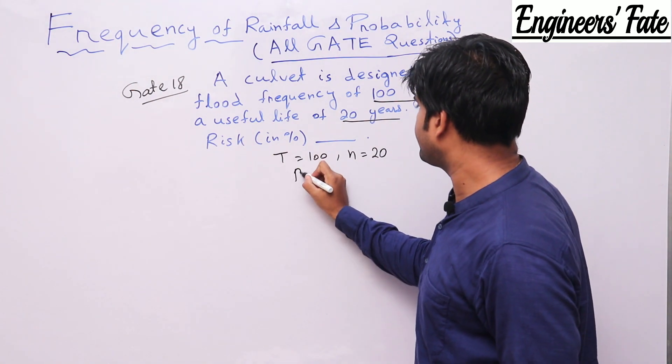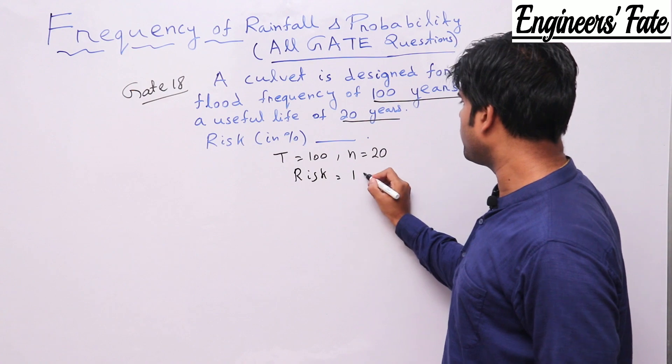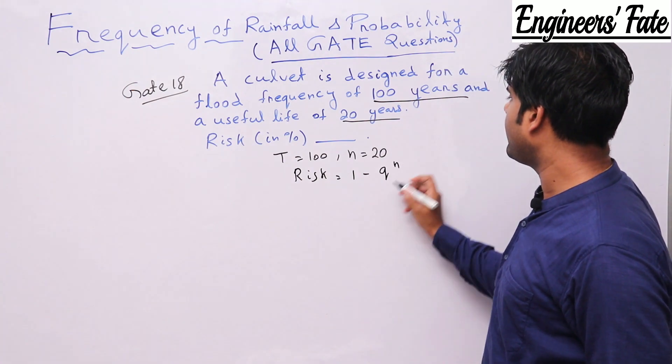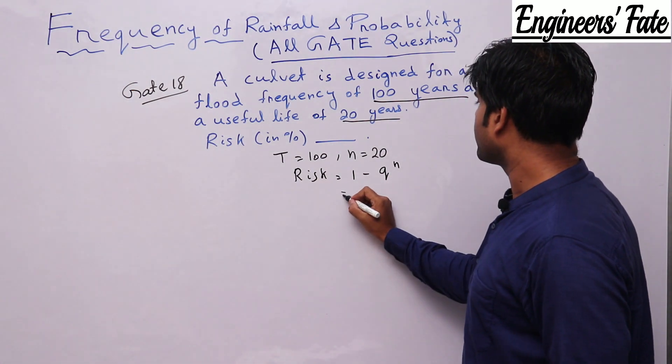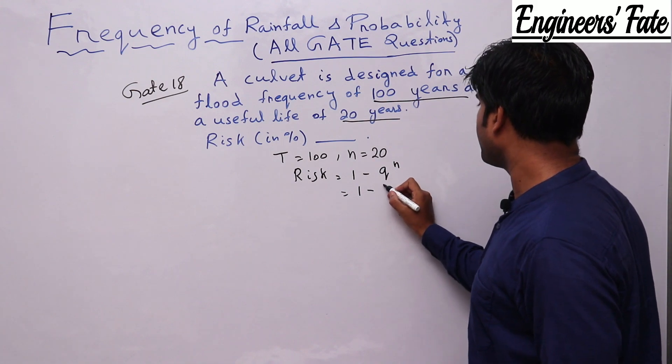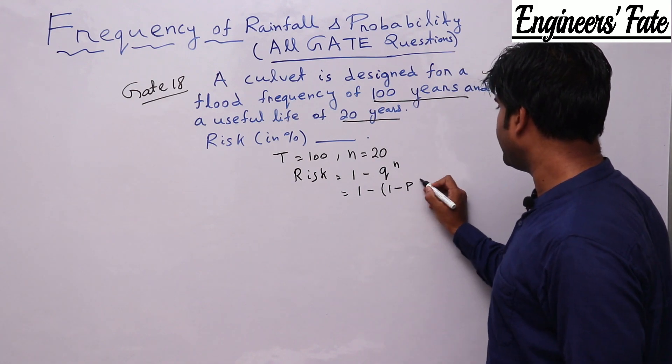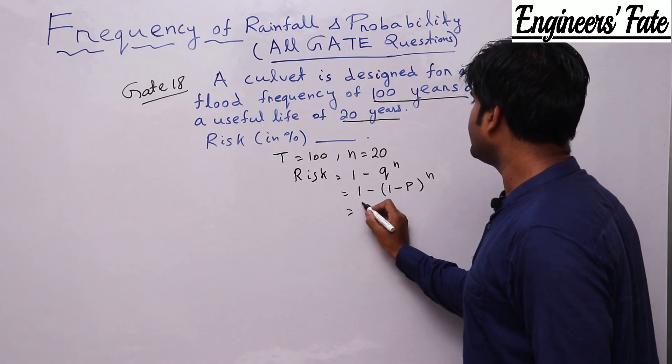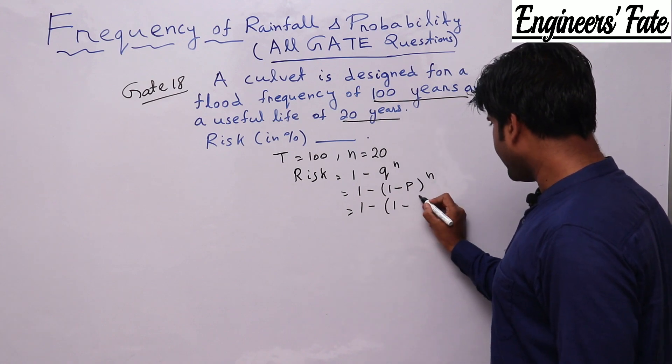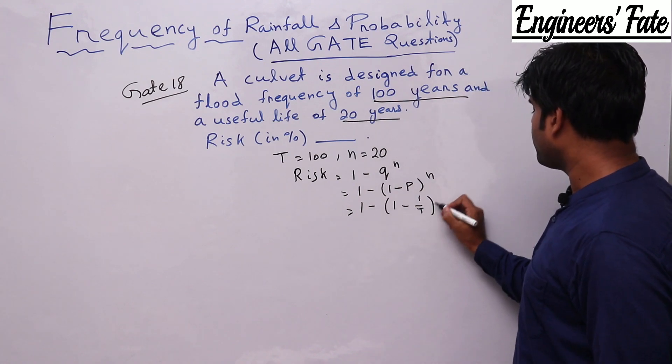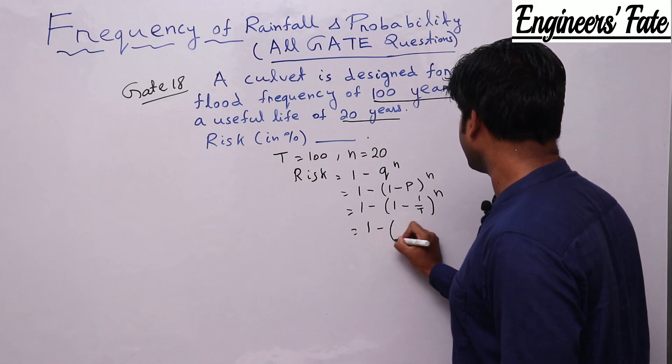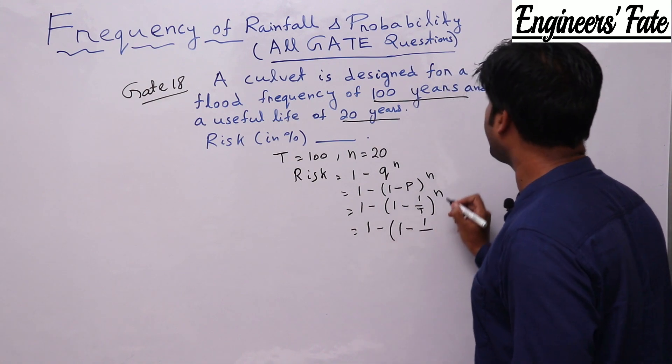So again, what is risk? Risk equal to 1 minus Q to the power N. What is Q? Q equal to 1 minus P. What is P? P equal to 1 by T to the power N.